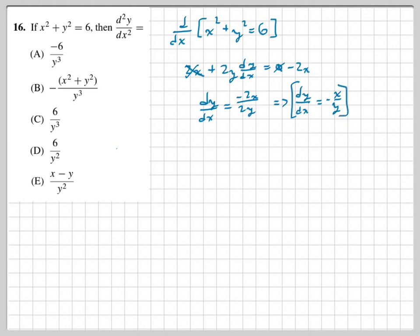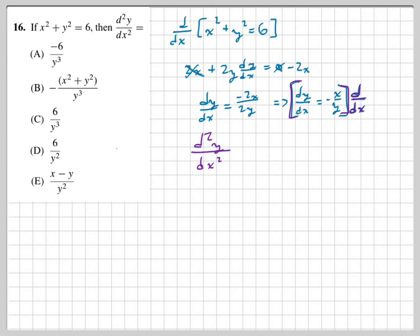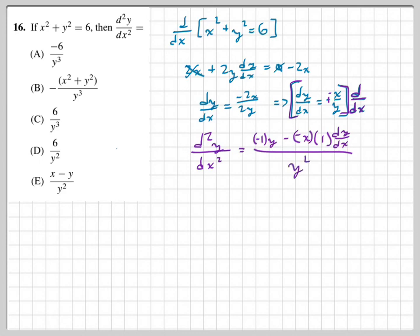Now I take the derivative again to find the second derivative. Using the quotient rule on negative x over y: derivative of the numerator negative x is negative 1, times the denominator y, minus negative x times the derivative of y (which is dy/dx), all divided by y squared.